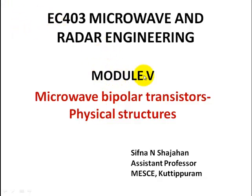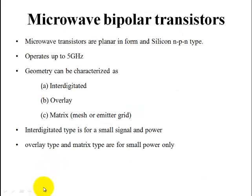Module 5: Microwave Bipolar Transistors and their Physical Structures. Microwave Bipolar Transistors are mainly silicon-based NPN transistors in planar form. It can operate up to about 5 GHz and the basic configurations of these bipolar transistors are interdigitated, overlay, and matrix.